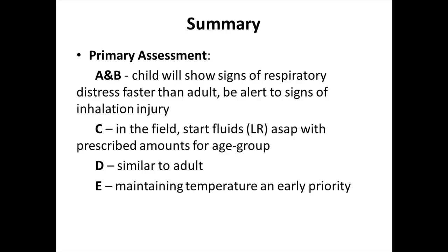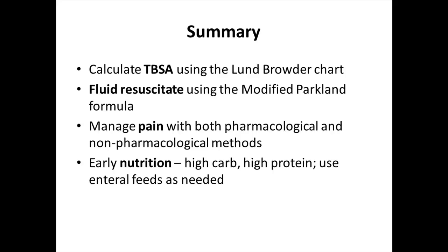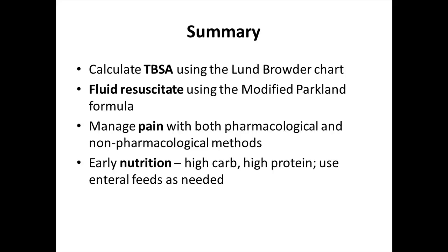In summary, for your primary assessment — airway and breathing: the child will show signs of respiratory distress faster than an adult; also be alert to signs of inhalation injuries. Circulation: in the field, start lactated Ringer's fluids as soon as possible with prescribed amounts for the age group. Disability is similar to the adult. Exposure: maintaining temperature is an early priority. Calculate the total body surface area using the Lund Broder chart. Fluid resuscitate using the modified Parkland formula. Manage pain with both pharmacological and non-pharmacological methods. In early nutrition, give high carbohydrates, high protein, using enteral feeds as needed. Caring for children with burns requires the knowledge of their unique physical and developmental needs. Consult your burn coordinating center hotline with questions and concerns.